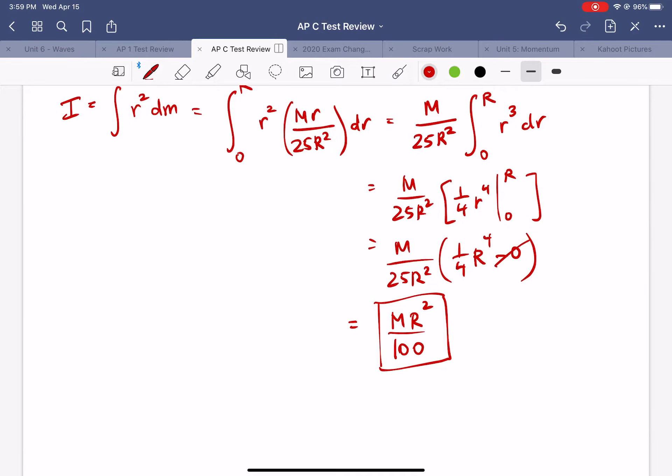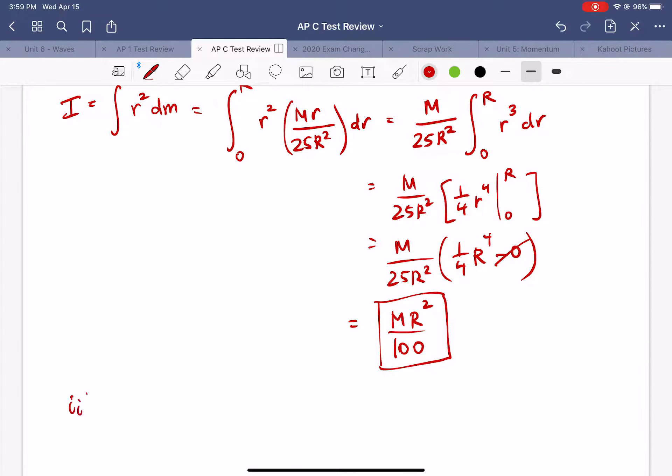All right and then the final part to this problem is just to find an expression for the rotational inertia of the disk that's been modified so basically the disk minus this wedge. So the main idea here is that moments of inertia for objects will add and subtract just like the masses will. So we can say the moment of inertia of the full disk is equal to the moment of inertia of the wedge plus the moment of inertia of the modified disk.